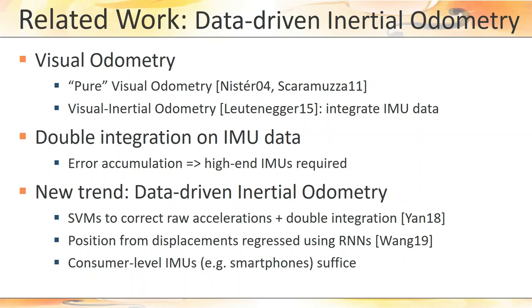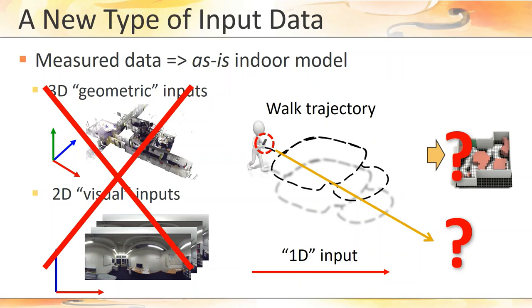Fortunately, there is a very promising line of research on data-driven inertial odometry that uses machine learning to correct the positional drifts that result from applying double integration to noisy accelerometer readings, such as the ones produced by consumer-level smartphones. This gives us a way to acquire indoor trajectories by simply walking through an indoor environment with smartphone and processing the resulting accelerometer readings with a trained neural network. Every person can basically act as a citizen sensor capable of collecting the necessary data to extract indoor models.